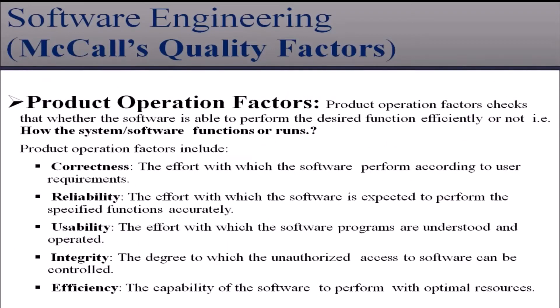Product operation factors check whether the software is able to perform the desired function efficiently or not, that is, how the system or software functions or runs. Product operation factors include correctness, reliability, usability, integrity, and efficiency.